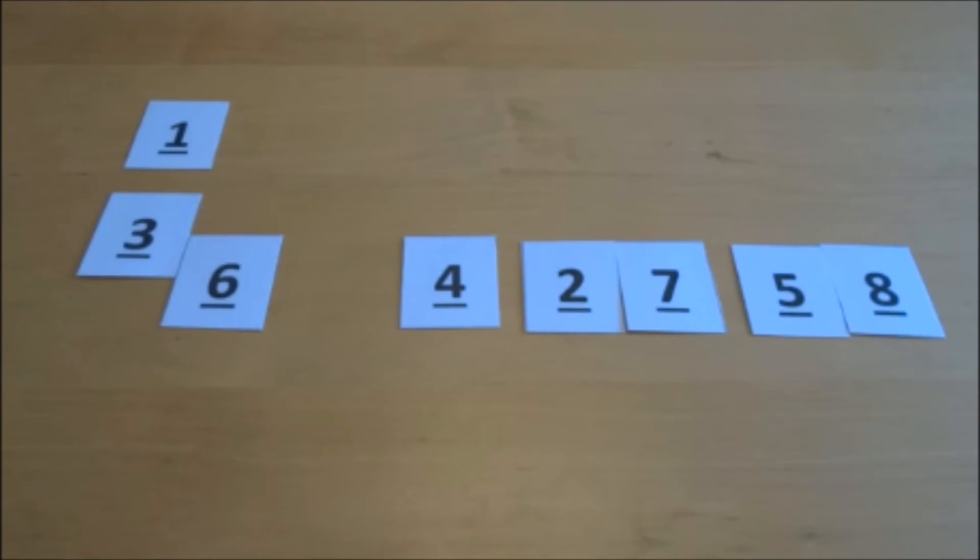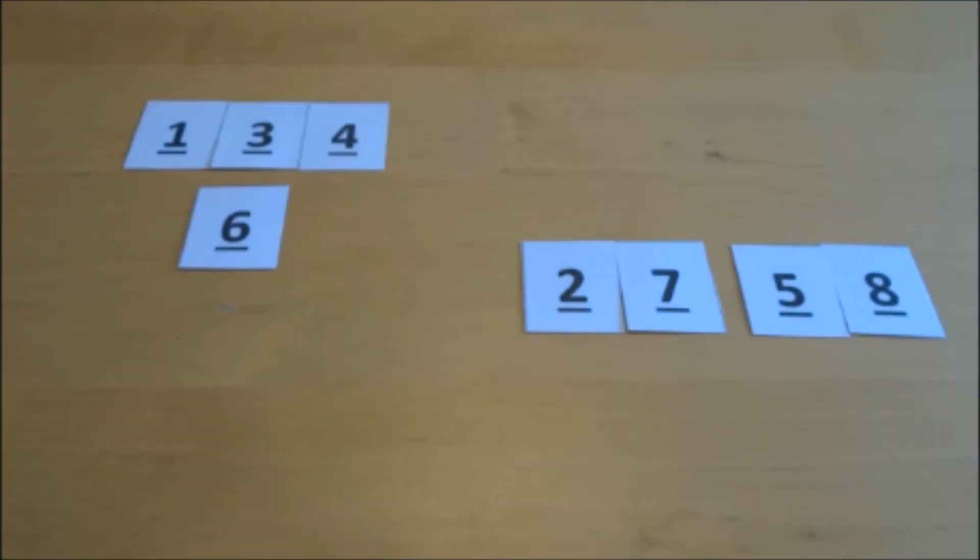You need to repeat this process until all the numbers in those first two arrays have been used up. So keep comparing the first positions and whichever is smaller, place them into the new array you've just created. And keep repeating this until they're all included and sorted in their order.